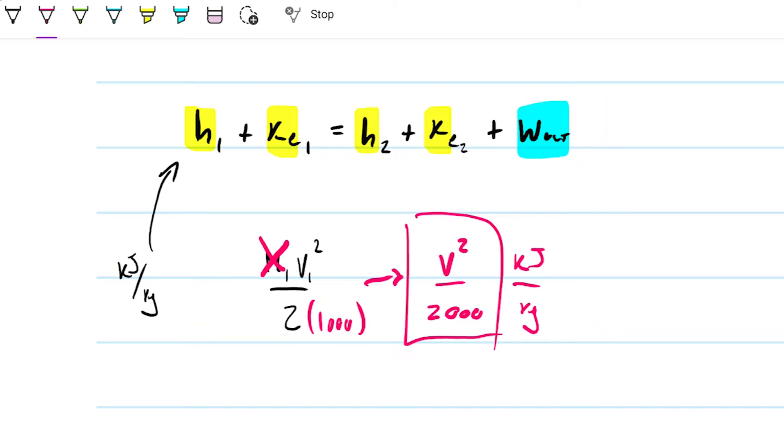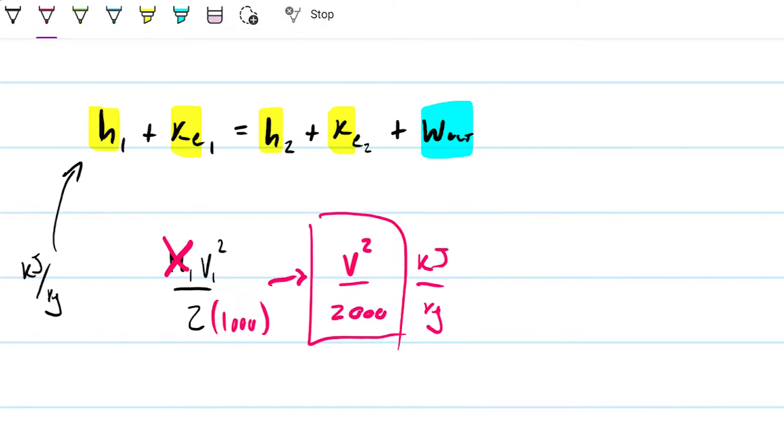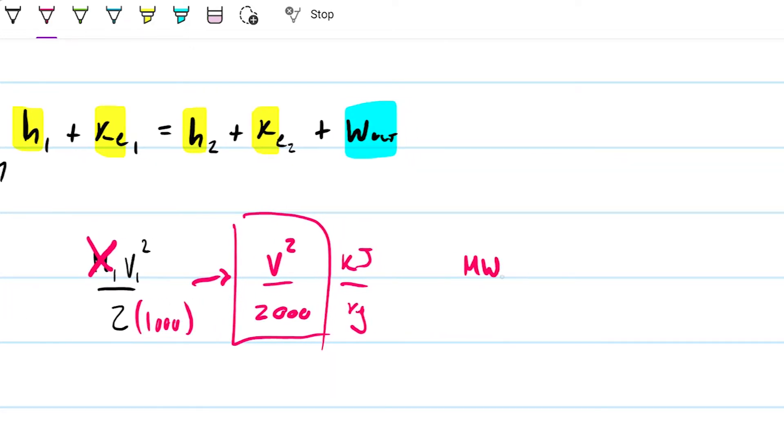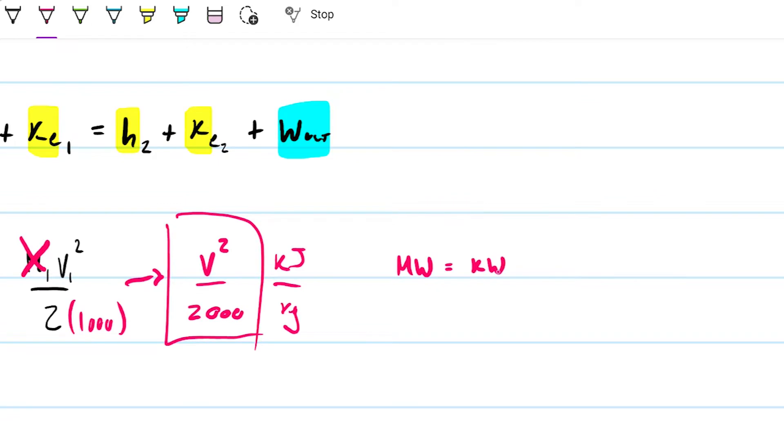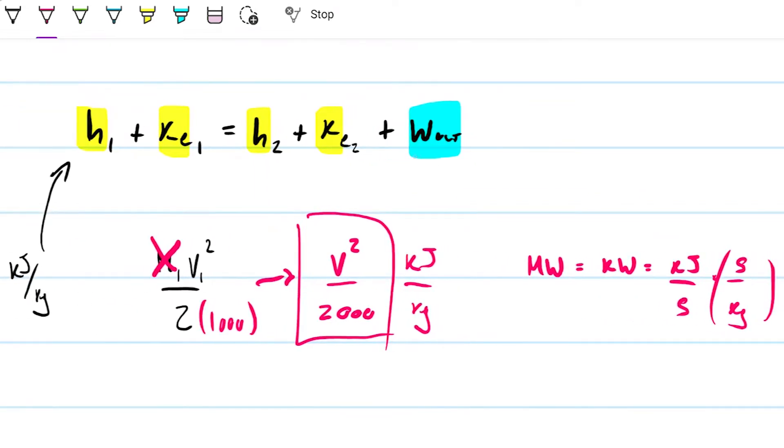And over here, work out, I'm going to get the same unit, whatever I put in here should be kilojoules per kilograms. In our case, what we have is megawatts. So I'm going to convert those megawatts into kilowatts, which is the same thing as kilojoules per second. And I can multiply that by the mass flow rate. So I'm going to get divided by the mass flow rate, divided by the mass flow rate, kilograms per second, so that I end up with kilojoules per kilograms. So therefore, to be able to use this equation here, I'll need to do this mass flow rate.